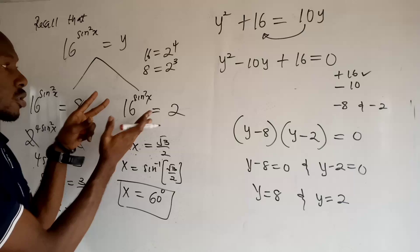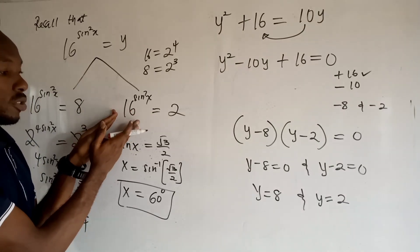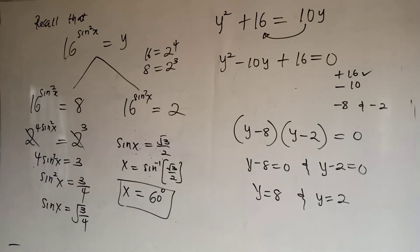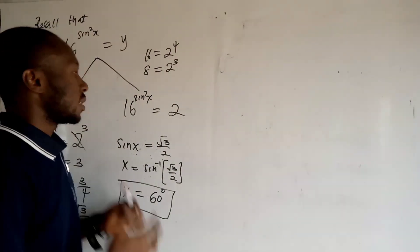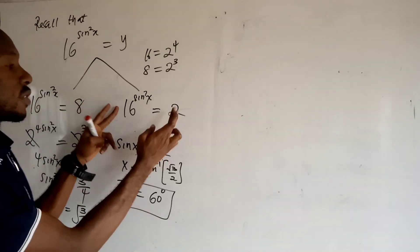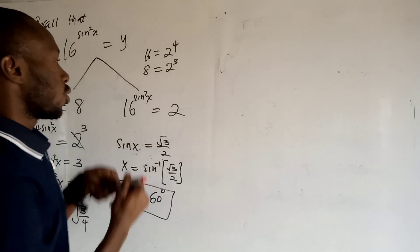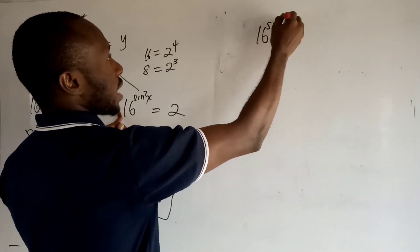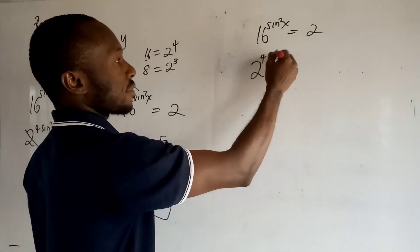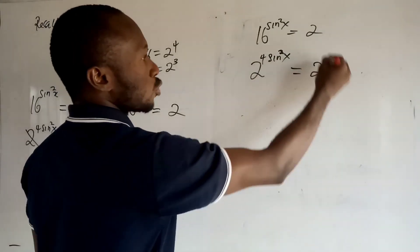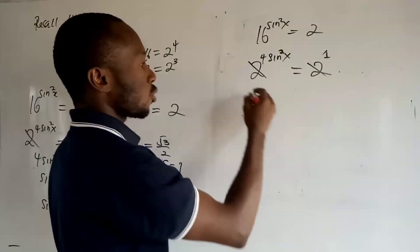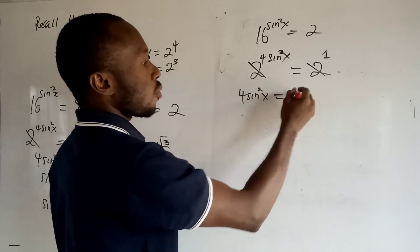Now we solve the second equation to get the other value of x. We have 16 to the power sin squared x equals 2. Since 16 equals 2 to the power of 4, and 2 equals 2 to the power of 1, we write 2 to the power 4 sin squared x equals 2 to the power 1. The bases cancel, so we have 4 sin squared x equals 1.